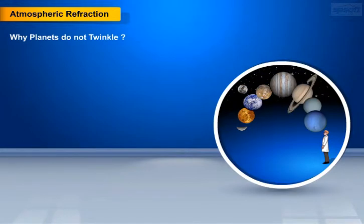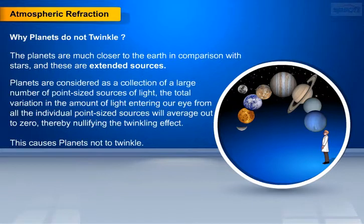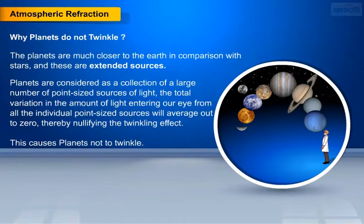Now let's study why planets do not twinkle. The planets are much closer to the earth in comparison with stars, and these are extended sources. Planets are considered as a collection of a large number of point-sized sources of light. The total variation in the amount of light entering our eye from all the individual point-sized sources will average out to zero, thereby nullifying the twinkling effect. This causes planets not to twinkle.